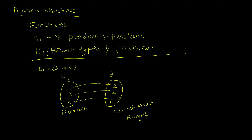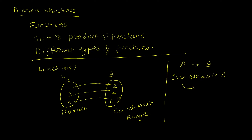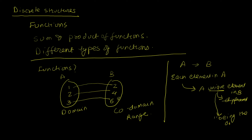So those are the three basic concepts: domain, co-domain, and range. Before something can be called a function, a relation can only be called a function if this property is met: each element in the first set A should be mapped to a unique element in the second set. Unique here doesn't mean different — it means being the only one. Each element in the domain must be mapped to only one element in the range.